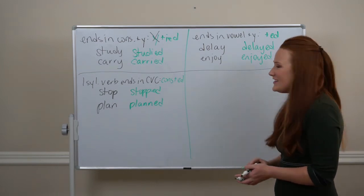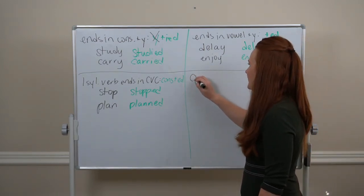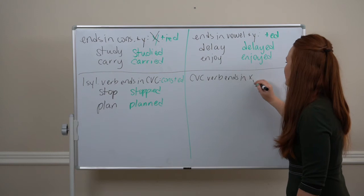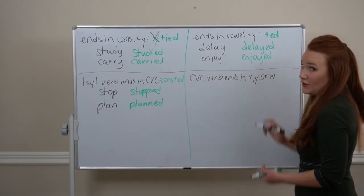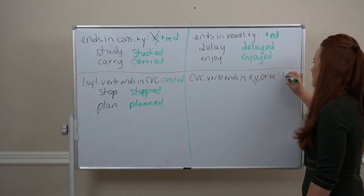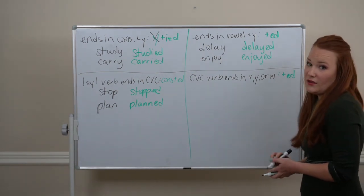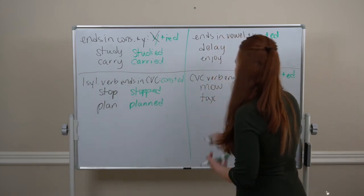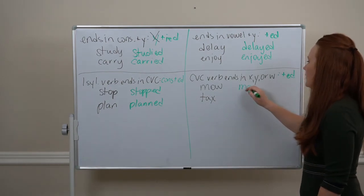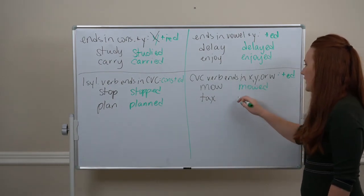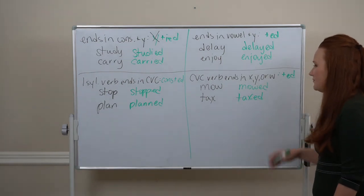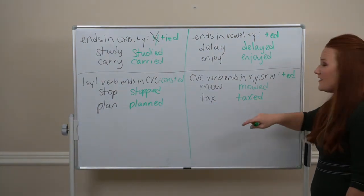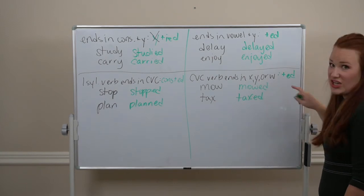But, that doesn't count if a CVC verb ends in X, Y, or W. In that case, just the regular ED. So, mow or tax. Yesterday, you mowed your lawn. Last year, you were taxed a thousand dollars. So, it's still CVC. Consonant, vowel, consonant. But, if that last consonant is an X, Y, or a W, just the ED.